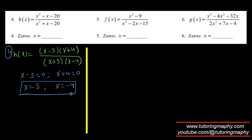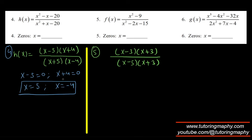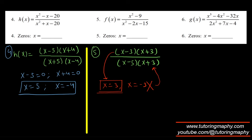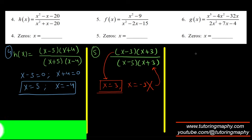For question five, the numerator looks like a difference of perfect squares, so I rewrite it as x minus three times x plus three. The denominator factors as x minus five times x plus three. The numerator is zero at x equals three and x equals negative three. However, negative three is not allowed because it makes the denominator zero. So the only answer is x equals three.